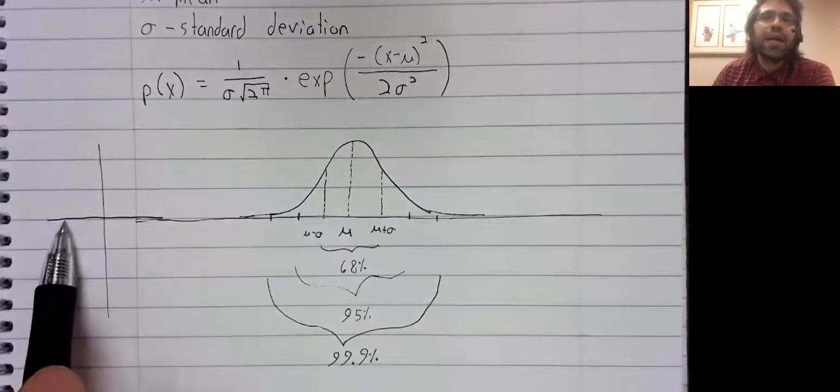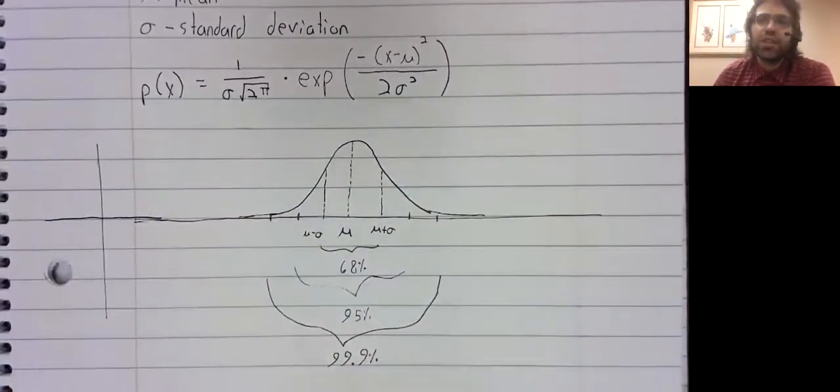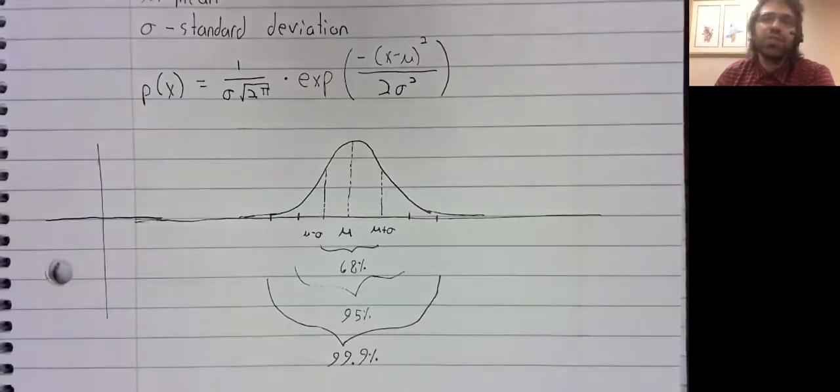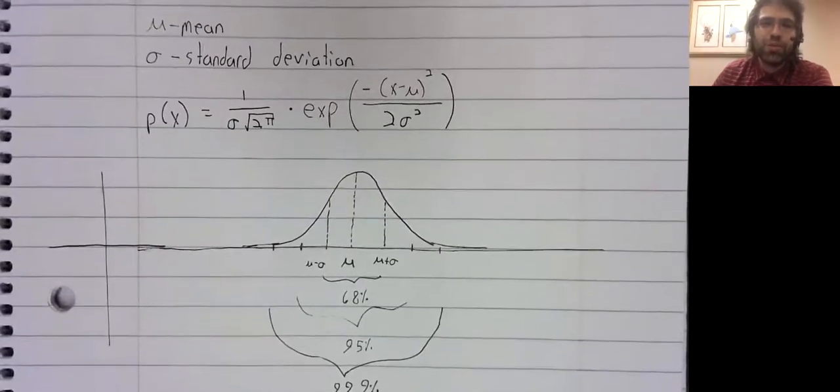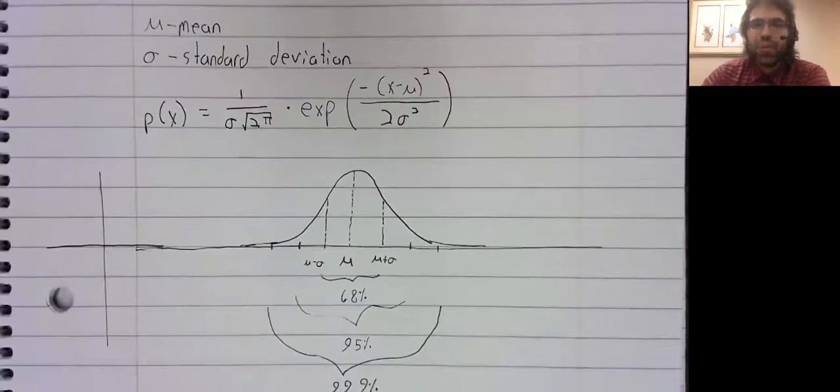that the probability might as well be zero. So that is our crash introduction to the normal distribution.